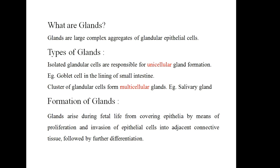What are glands? Glands are large complex aggregates of glandular epithelial cells. There are mainly two types of glands: unicellular and multicellular. Isolated glandular cells are responsible for unicellular gland formation — for example, goblet cells in the lining of the small intestine. Clusters of glandular cells form multicellular glands — for example, salivary glands.